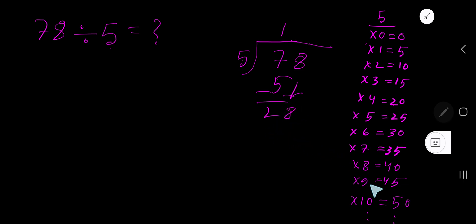5 goes into 28 how many times? 6 times is 30 which is greater, so 5 times. 5 times 5 is 25. Subtract to get 3. So your answer is 15 remainder 3.